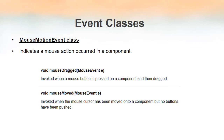We also have the MouseMotionEvent class, which is also used for indicating a mouse action. The two methods available inside this class are mouseDragged and mouseMoved, whose parameters are objects of the MouseEvent class. Mouse dragged means we are moving the mouse cursor while pressing a mouse button, whereas mouse moved means we are just moving the cursor over a component without pressing any button.